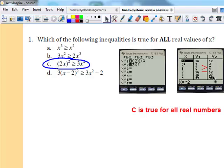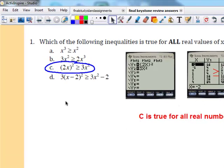I could go through my table. I could see that I'm getting true statements. Y sub 1 is greater than y sub 2 no matter what input it is - negative, zero, or positive. So answer is C to number 1.